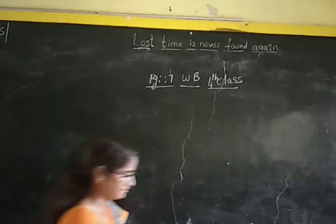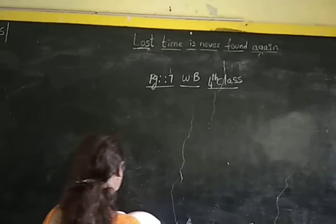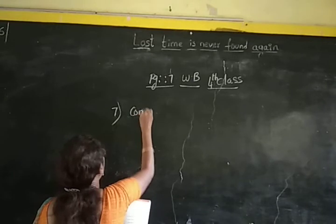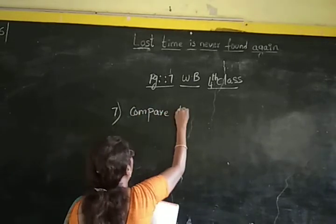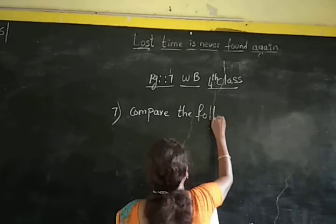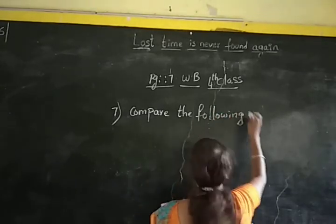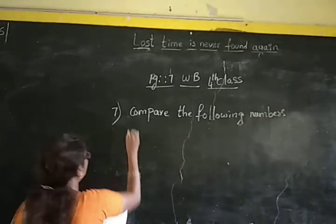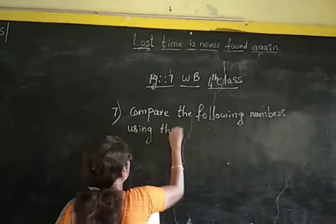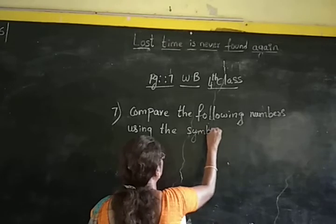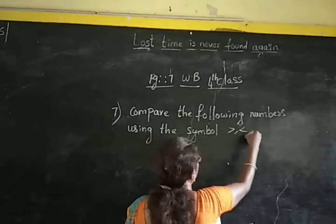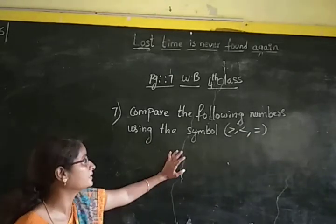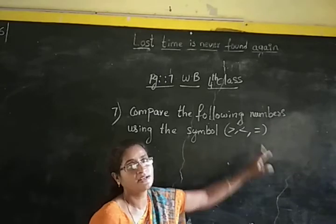Now let us see the 7th sum. The 7th sum is to compare the following numbers using the symbols greater than, lesser than, and equal to. So in question 7, we have to compare the given numbers with greater than, lesser than, and equal to symbols.